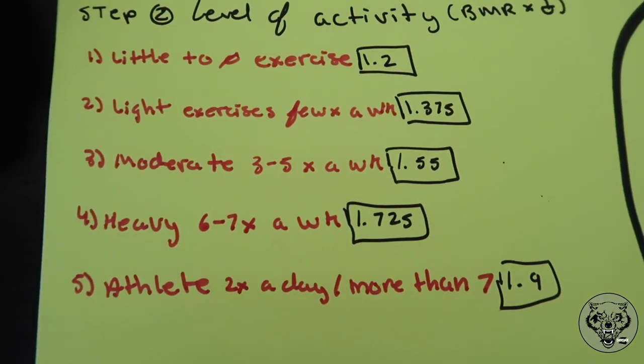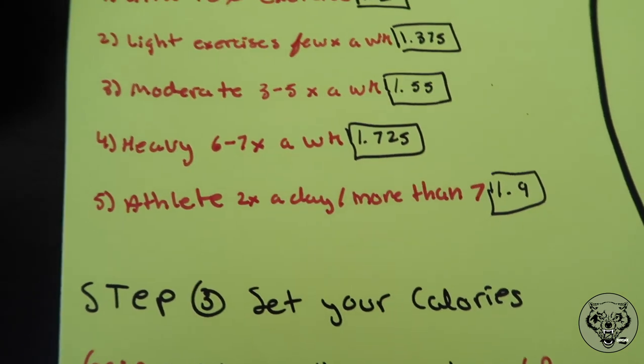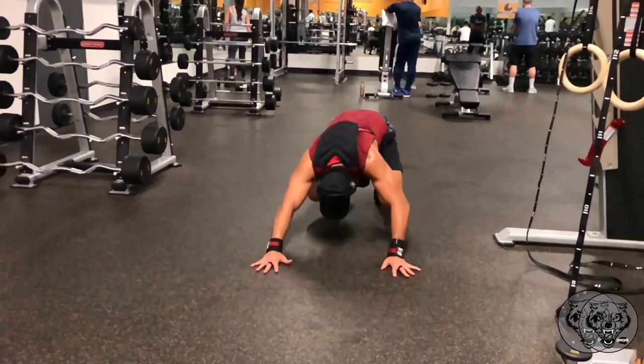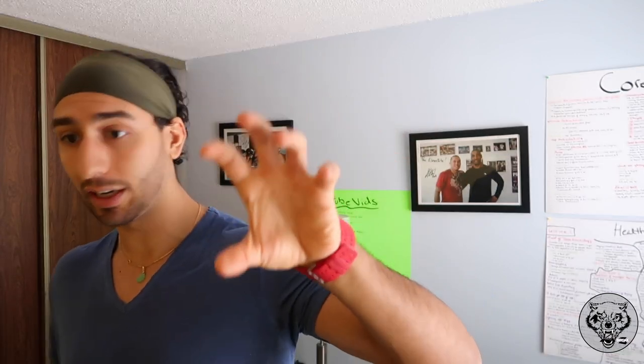If you do moderate exercise three to five times a week, multiply that number by 1.55. If you do a lot of heavy training every single day, multiply by 1.725. And if you're an athlete training seven days a week or more, multiply by 1.9. I personally train roughly two times a day, every day, seven days a week, so that's the number I use. It will vary depending on the person.